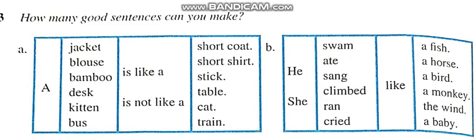Now we are on page 12, question number 3: How many good sentences can you make? Aap kitne sentence bina sakti hai? Aapke paas different options hai: 'is like a' and 'is not like a'.